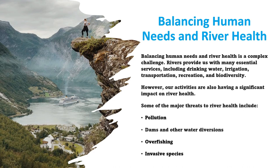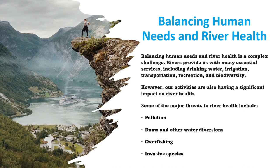There are a number of things that can be done to balance human needs and river health. Conservation involves reducing water consumption, improving water efficiency, and recycling water. Restoration can include removing dams, restoring natural flow regimes, replanting riparian vegetation, and educating people to understand the importance of healthy rivers and how they can help to protect them.